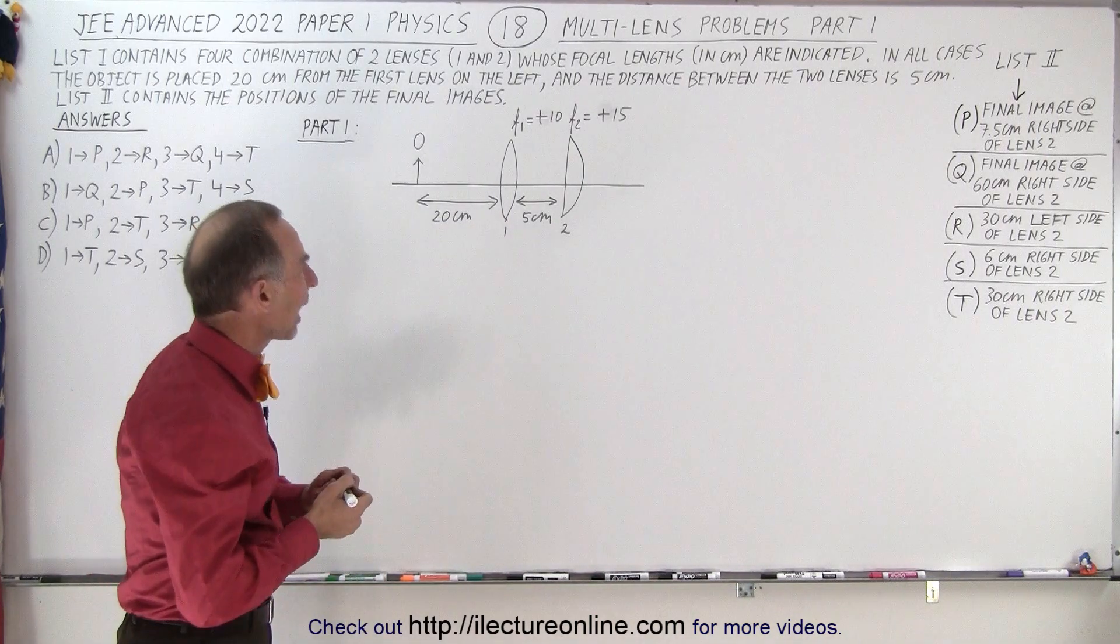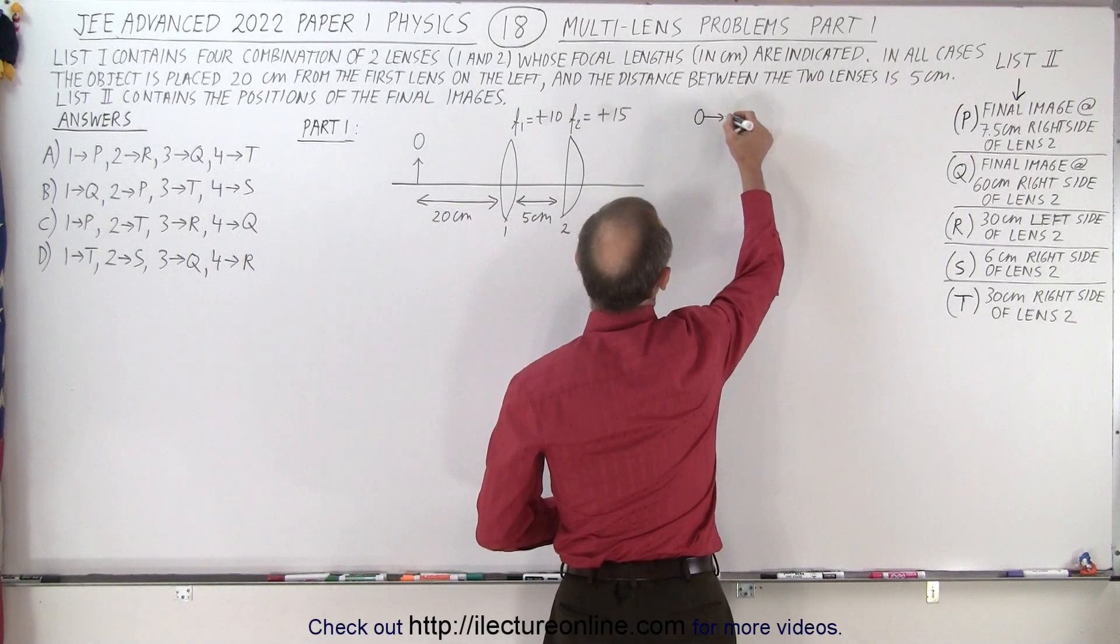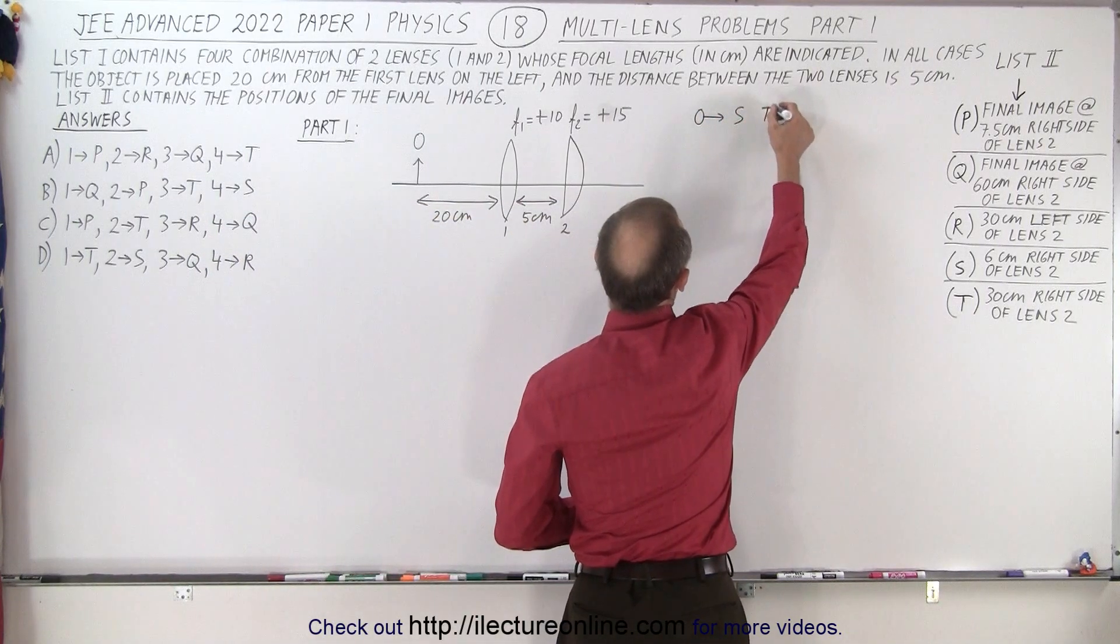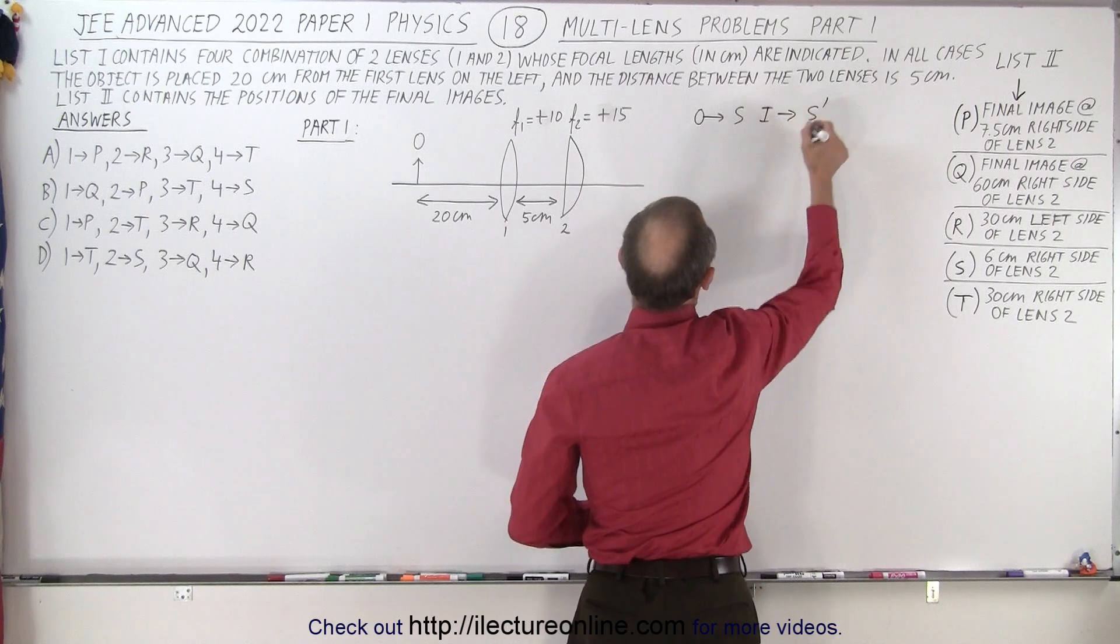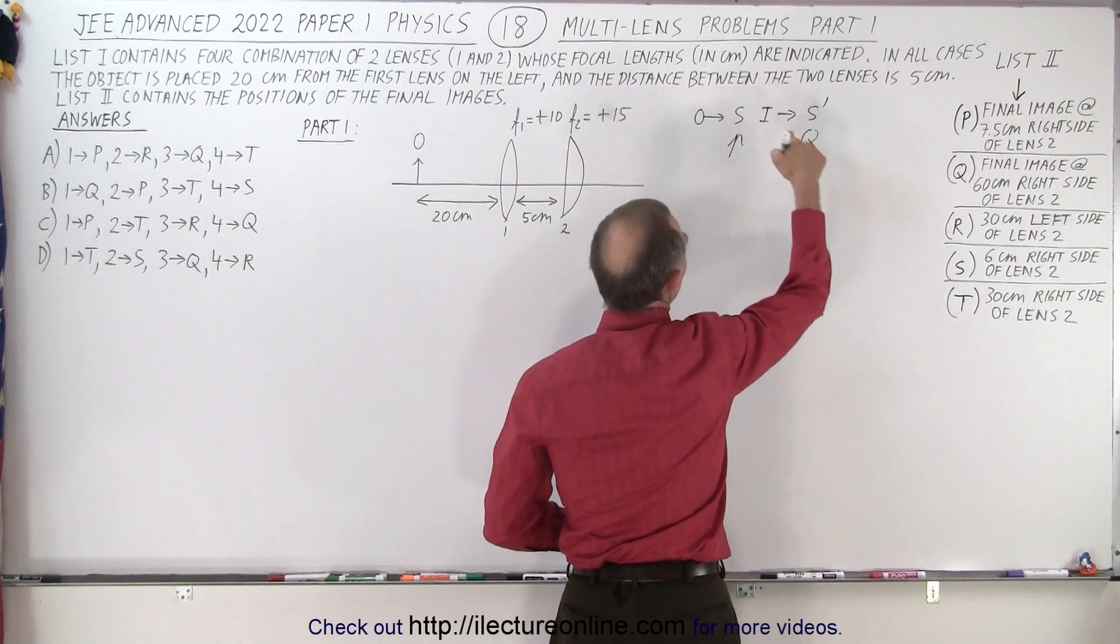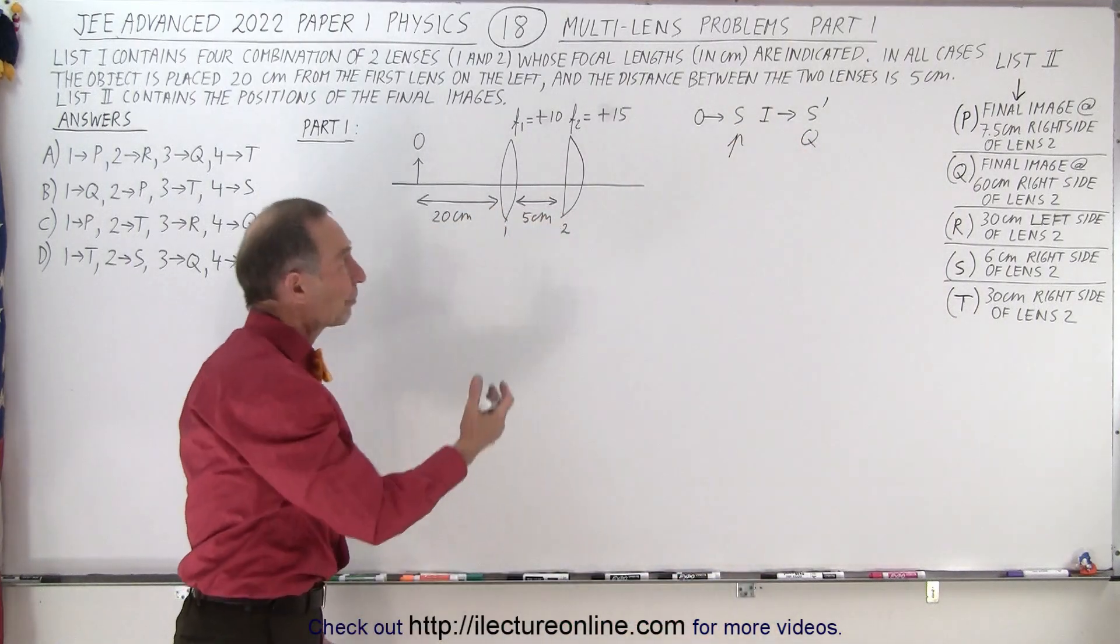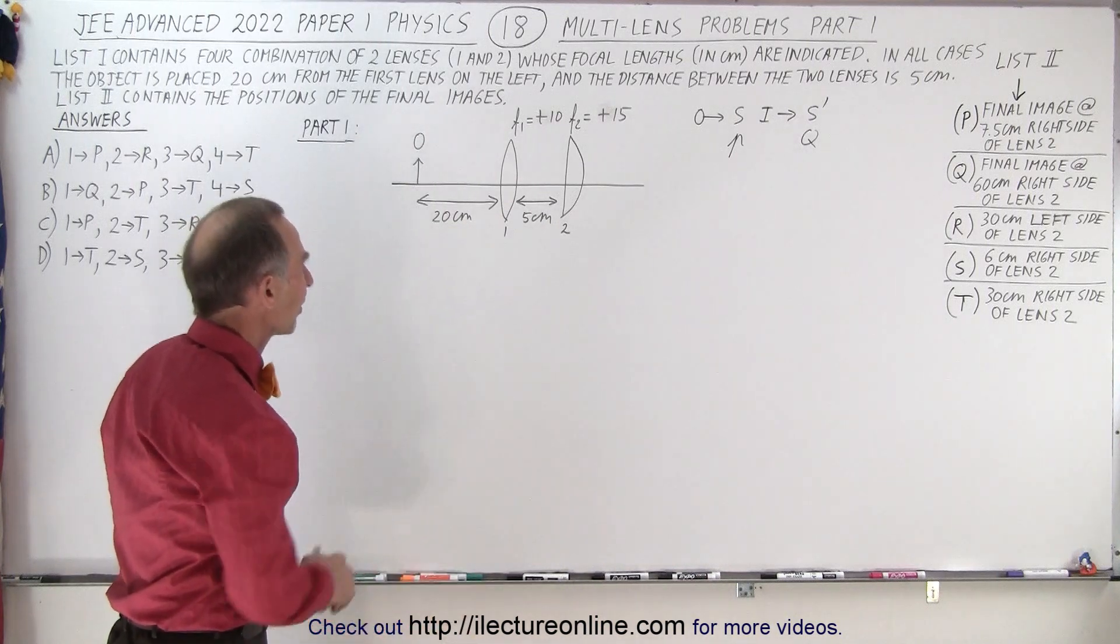Now convention-wise, I like to use the letter S for the object distance, and for the image distance, I like to use S prime. Other books use P and Q for the object distance and the image distance. So whichever you prefer. But I prefer S and S prime, so I'll be using S and S prime.